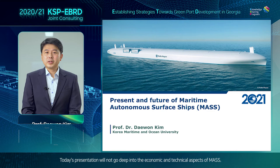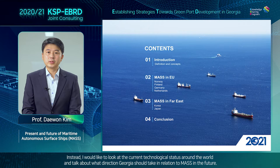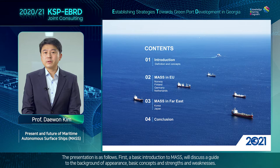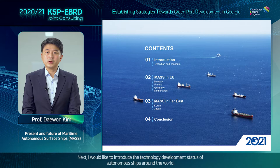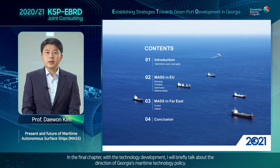Today's presentation will not go deep into the economic and technical aspects of MASS. Instead, I would like to look at the current technological status around the world and talk about what direction Georgia should take in relation to MASS in the future. The presentation is as follows: first, a basic introduction to MASS covering background of appearance, basic concept, strengths and weaknesses. Next, I would like to introduce the technology development status of autonomous ships around the world, in particular the countries in Europe and the Far East where the most active research is underway. In the final chapter, I will briefly talk about the direction of Georgia's maritime technology policy.